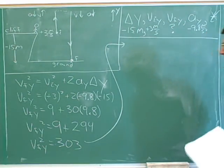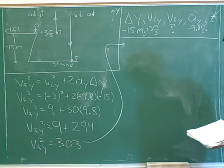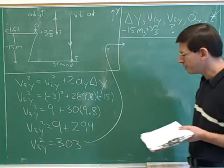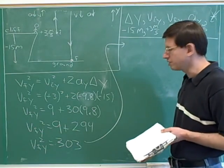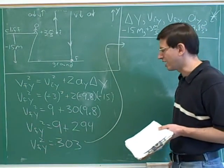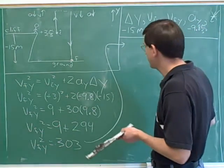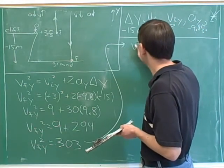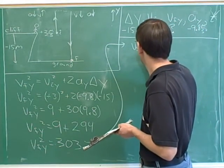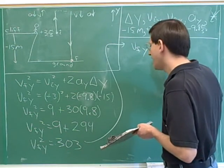Let's move our work up to here. When we take the square root of the left-hand side, that gets rid of the square and we're left with the final y velocity.